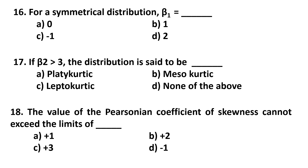Question 18. The value of the Pearsonian coefficient of skewness cannot exceed the limits of plus or minus: 1, 2, or 3.